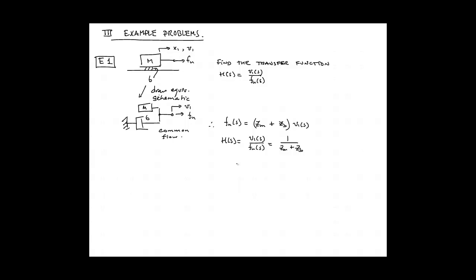Our final step is simply to replace those two impedances with the actual impedances. So S times M for the mass and B for the viscous damper. Our final step then is just to format this into a standard form. We bring out 1 over B and we write it in a normalized form S over a corner frequency or pole frequency plus 1. We find that the pole frequency is equal to B over M.